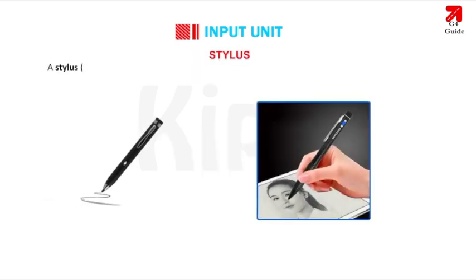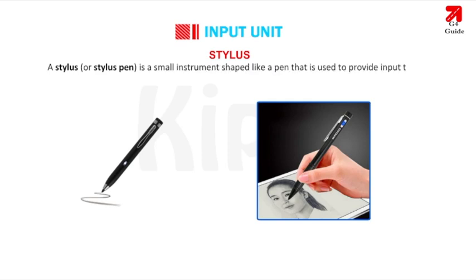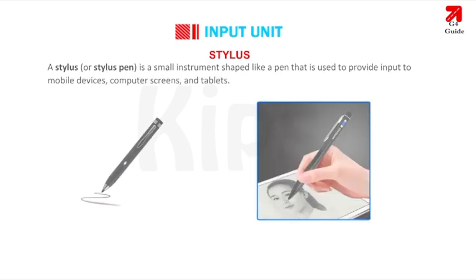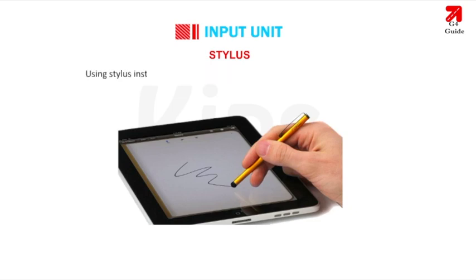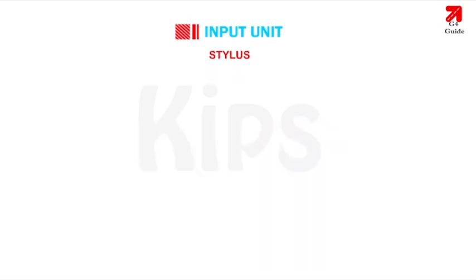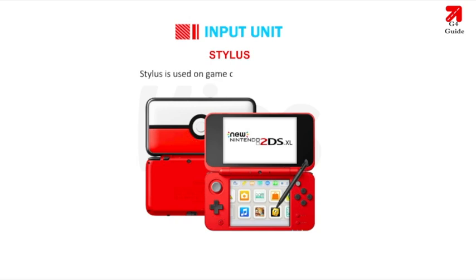A stylus or stylus pen is a small instrument shaped like a pen that is used to provide input to mobile devices, computer screens and tablets. It can be used to draw or make selections on touch screen devices directly on the screen. Using a stylus instead of a mouse or trackball is also called pen computing. Stylus is used on game consoles like Nintendo.